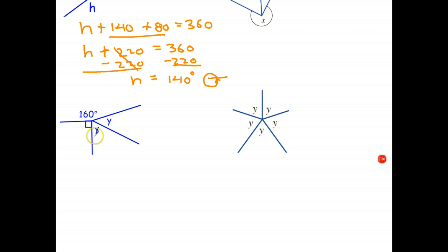I'll do this next one algebraically again. Once the unknown appears more than once, it's probably easiest to do it using algebra. So all of these angles add to 360 degrees.